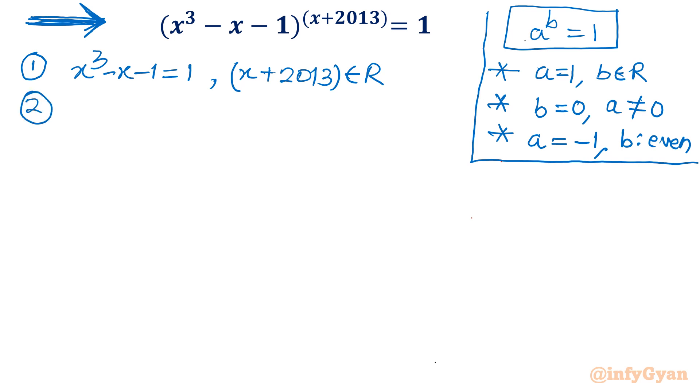Second case, I will write power 0. So x plus 2013 equals to 0. And now whatever I am getting x is equal to minus 2013, it should not make our base 0. So I will put x cube minus x minus 1 at x equal to minus 2013. It should not be 0. If it is 0, we will reject that solution. Third one, a equal to minus 1. So our base equal to minus 1. Now I have to check which x value is satisfying the condition x plus 2013 is even.